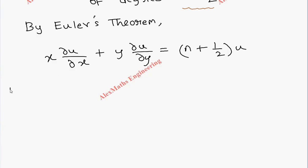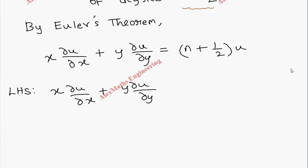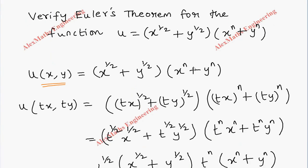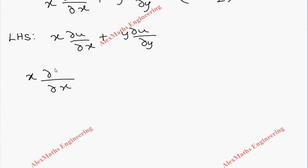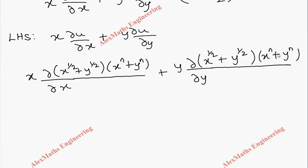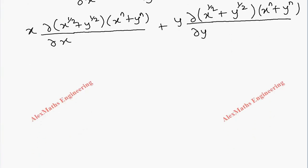Now we have to verify Euler's theorem. The LHS is x·∂u/∂x + y·∂u/∂y. In place of u we substitute the function, which is the entire term (x^(1/2) + y^(1/2))(x^n + y^n). We have to differentiate this using the product rule.